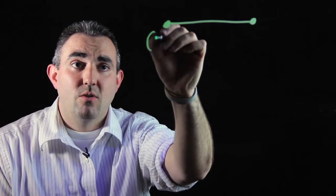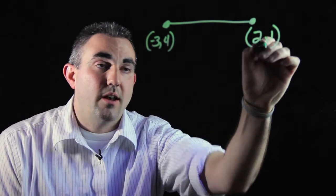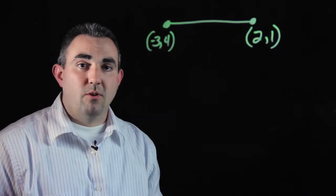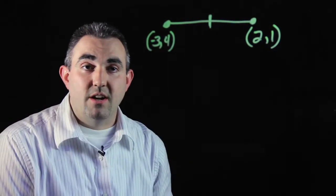So for this point here we're going to call it negative 3, 4, and this point here will be 2, 1. The way Euclid's formula works for the midpoint formula, to find this middle range here,